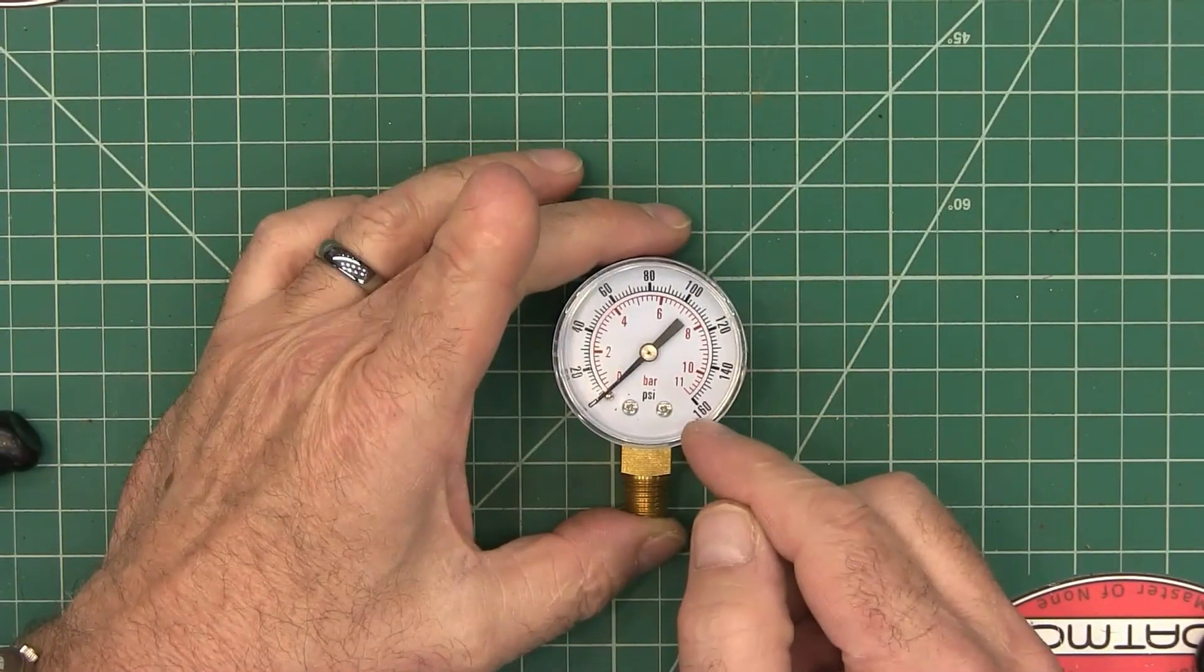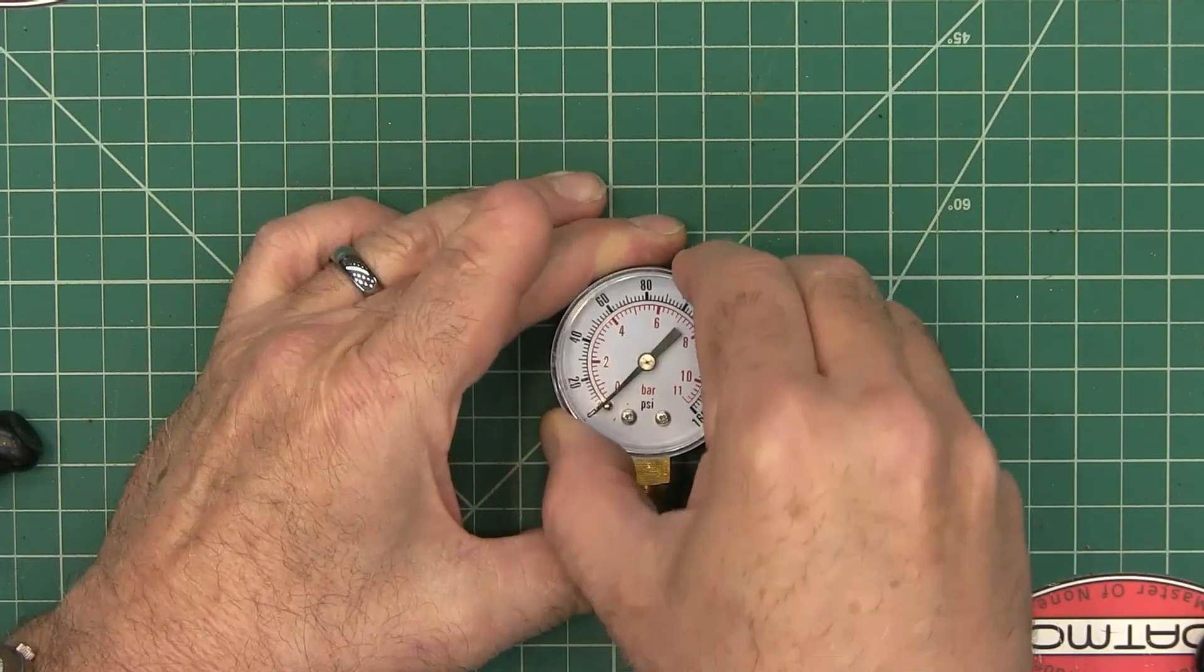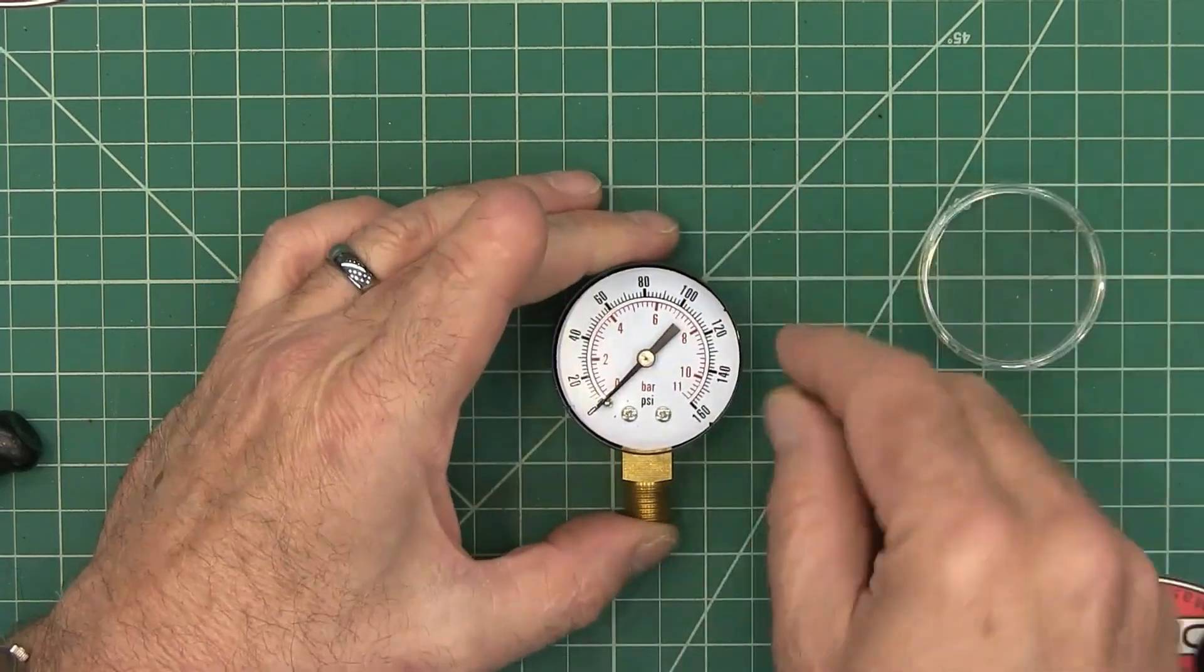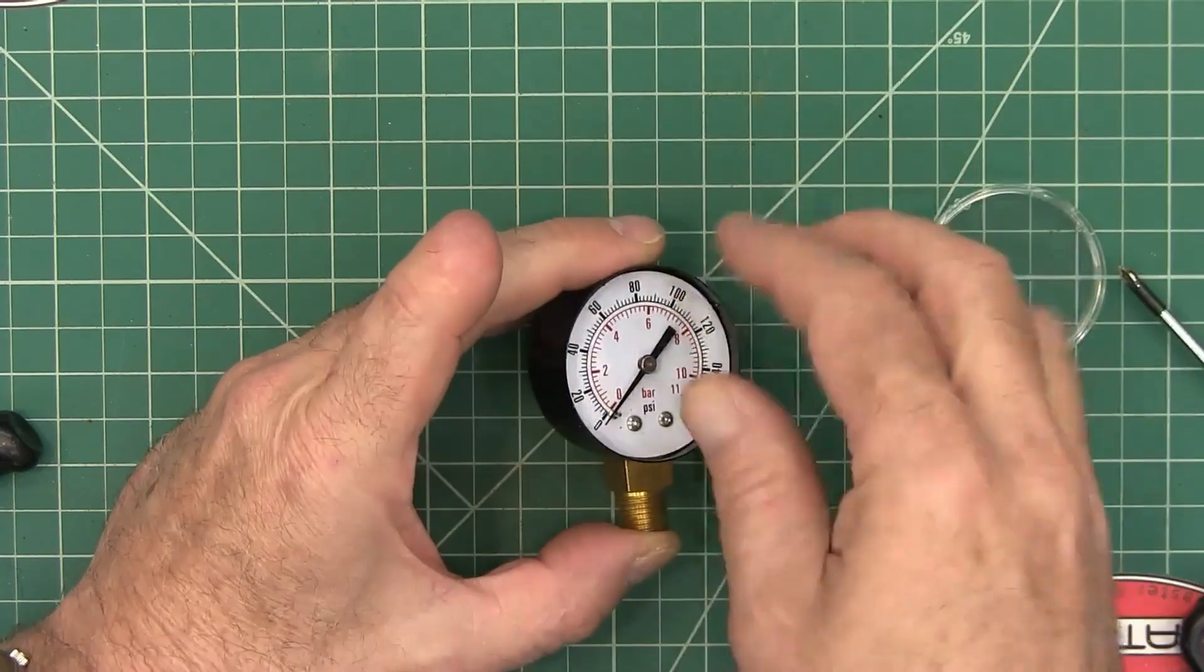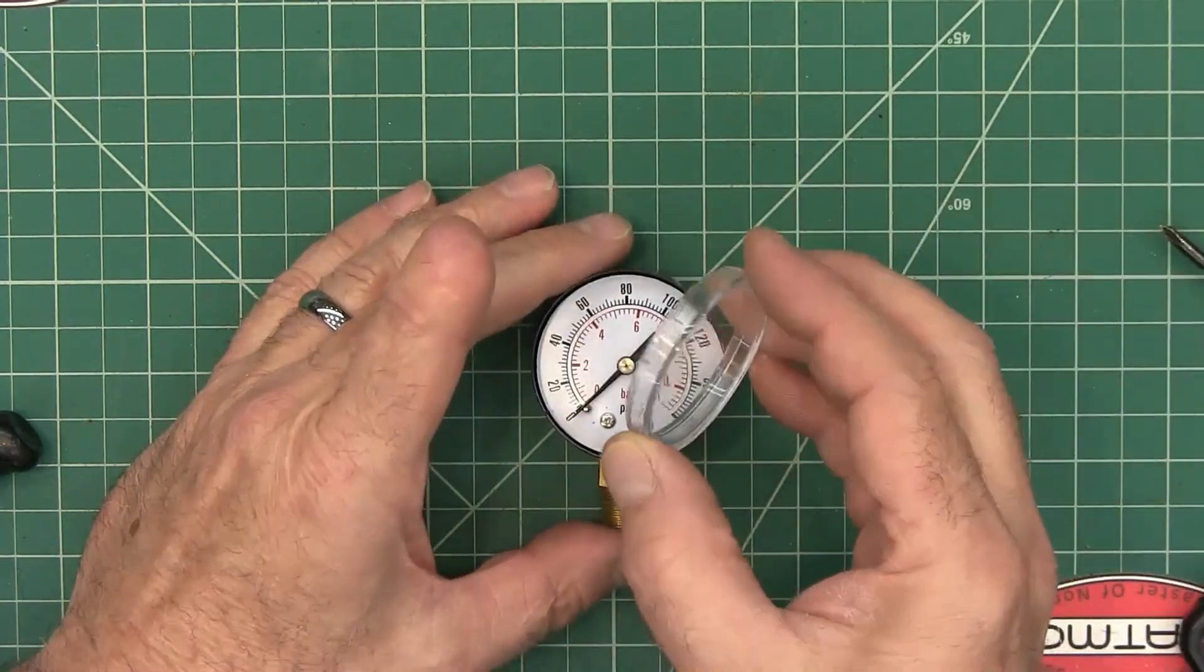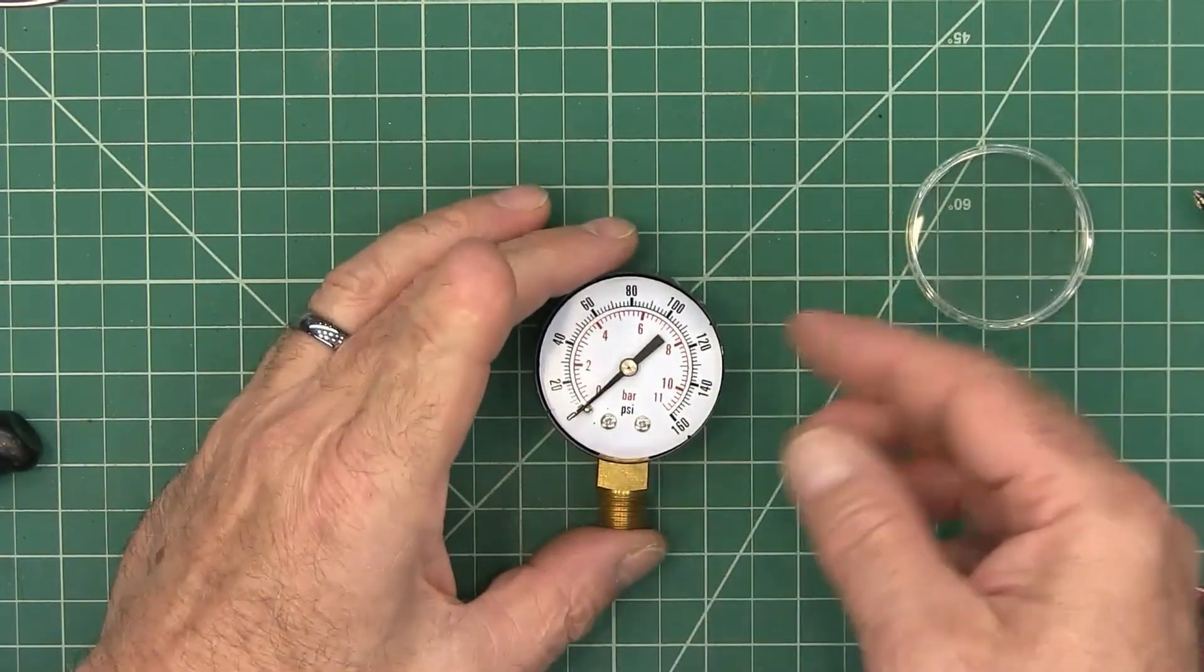Now here is our donor pressure gauge and I already pried this lid off. It's just got some little barbs on the inside. Some of them unscrew. This one had little barbs that stuck in to hold onto the plastic so I just had to kind of scrape it up out of there.